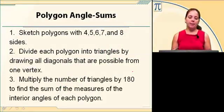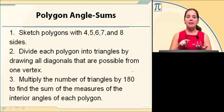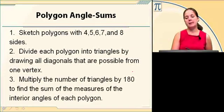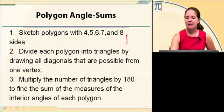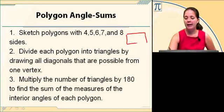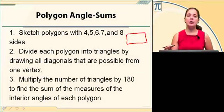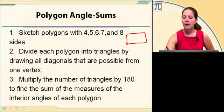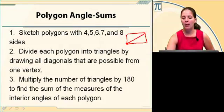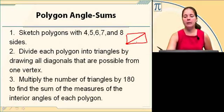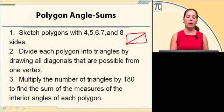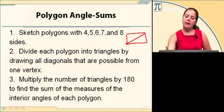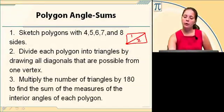We're going to do an activity. Sketch polygons with four sides, five sides, six, seven, and eight sides. Then take those polygons and divide them into triangles. For instance, sketch a quadrilateral, four sides. We're going to divide it into triangles by picking one vertex, any vertex you want, and then drawing all the diagonals possible from that one vertex. With this one, there's only one diagonal possible from that one vertex.